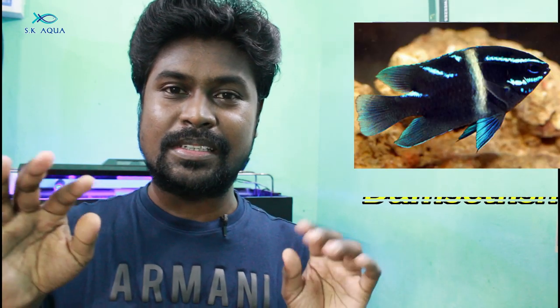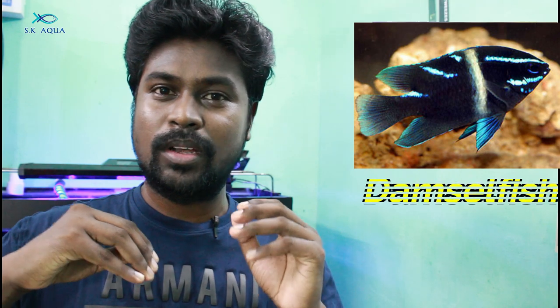Number 4: Damsel fish — Azure damsel, blue damsel, yellow-tailed damsel, post-type damsel, and velvet damsel. What is this damsel fish? It's a very territorial fish. If you choose a tank or a half, you can choose one. You can also introduce one, add one.